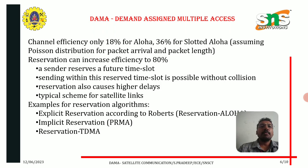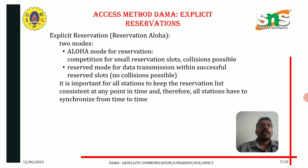Examples of reservation algorithms are: explicit reservation according to Roberts, i.e. Reservation ALOHA; implicit reservation, i.e. PRMA; and Reservation TDMA. Access methods for DAMA include explicit reservation. Explicit reservation, i.e. Reservation ALOHA, works under two modes.